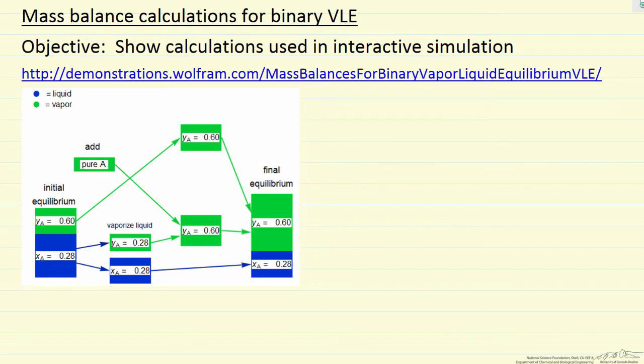What is often confusing is that if we're adding just one component, how can we maintain the mole fractions of each phase the same? This simulation is trying to demonstrate this with small rectangles that represent the amount.